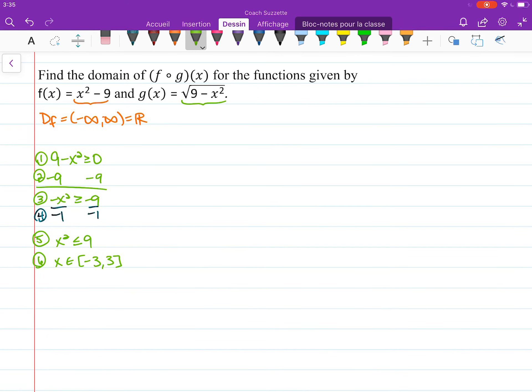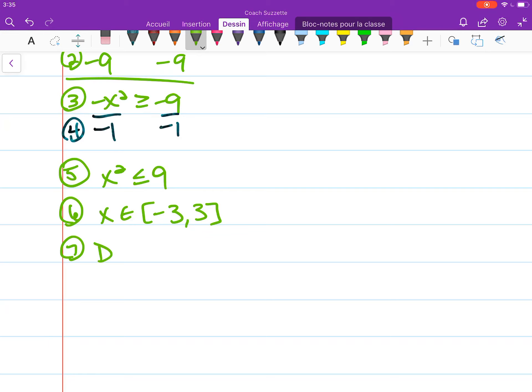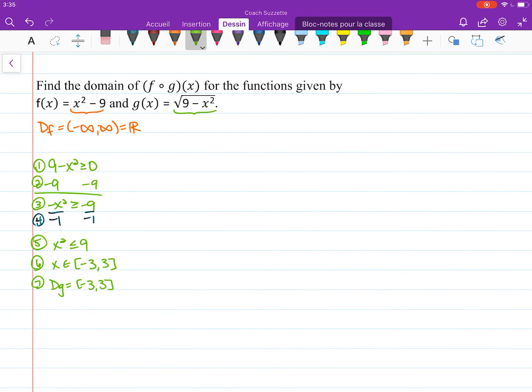So since the domain for g is [-3, 3], now we just need to find what the domain is of the composition f(g(x)).